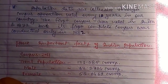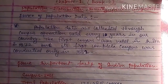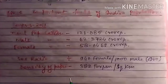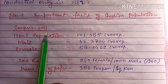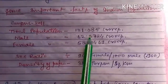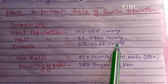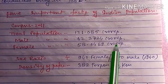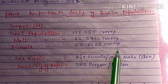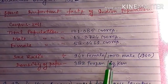This question is asked many times in examinations — when was the first census and the first complete census held. According to the 2011 census, the total population is 121.085 crores: males are 62.3724 crores and females are 58.6469 crores. The sex ratio is 940 females per 1,000 males.